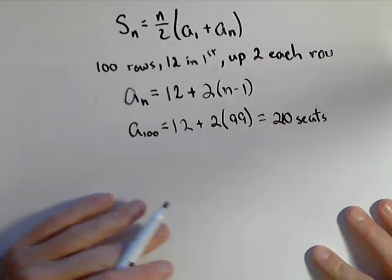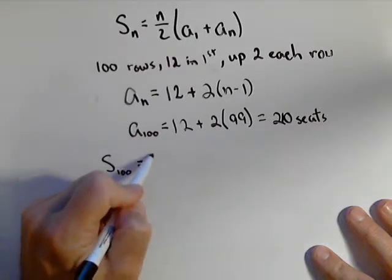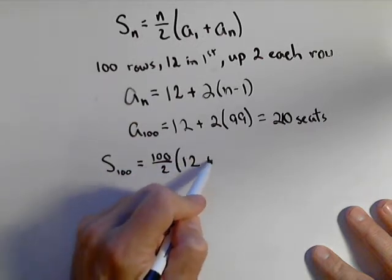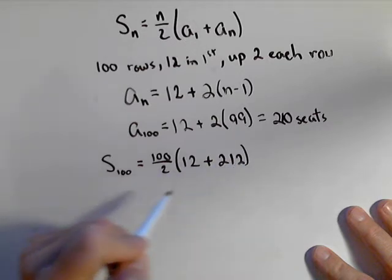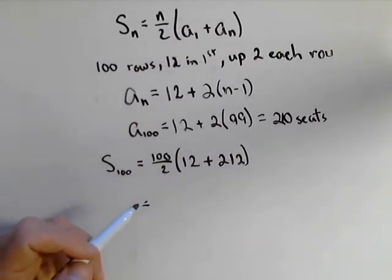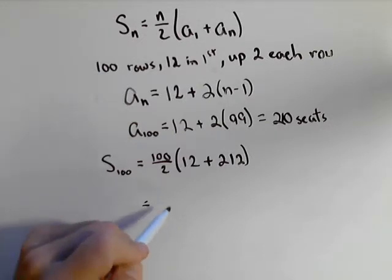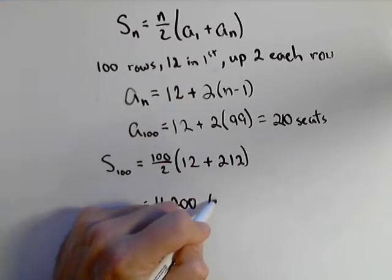Now I can do the sum of the first hundred rows. It's the number of rows, 100 over two, times the number in the first row, 12, plus 210. And so summing that up, 12 plus 212, we've got 11,200 total seats.